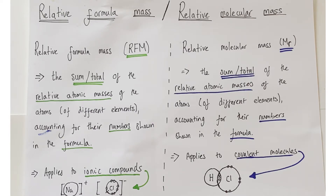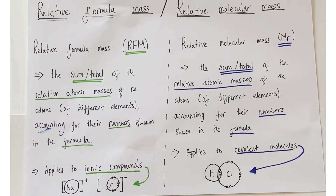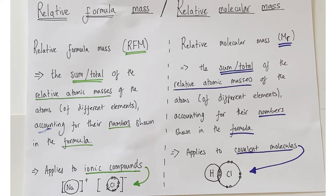A relative formula mass is the sum or total of the relative atomic masses of the atoms of different elements that make up a compound, accounting for the numbers shown in the formula. It generally applies to ionic compounds, like sodium chloride. Relative molecular mass is virtually the same — the sum of relative atomic masses of atoms making up a molecule, accounting for their numbers, but it applies to covalently bonded molecules like hydrogen chloride rather than ionically bonded compounds.